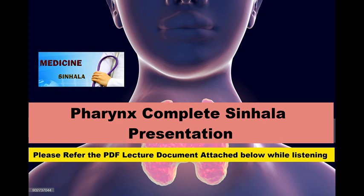The laryngopharynx is the final part of the pharynx. It extends from the tip of the epiglottis to the lower border of the cricoid cartilage. It contains the laryngeal inlet. There is also a structure relating to the piriform recess region.